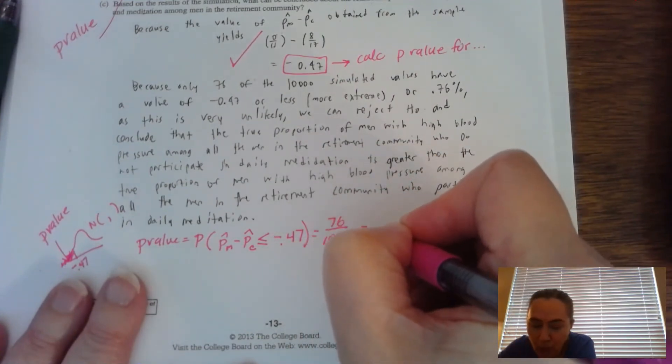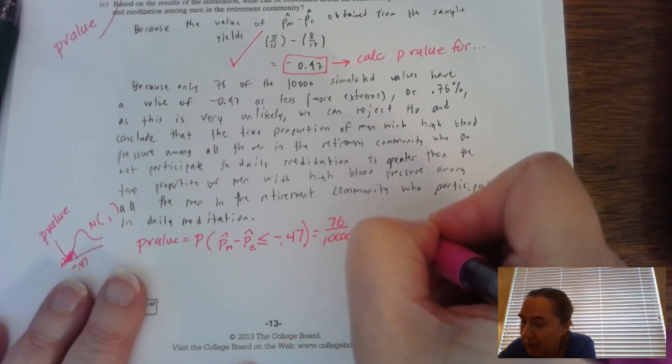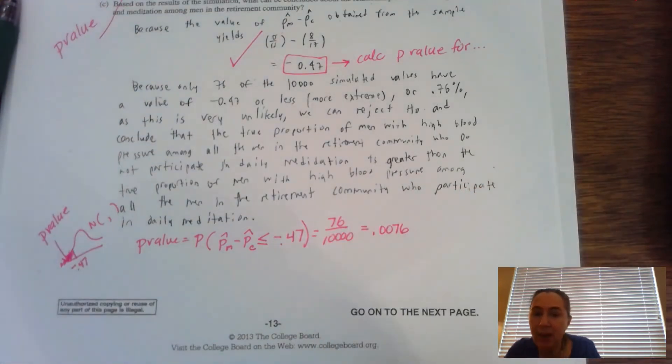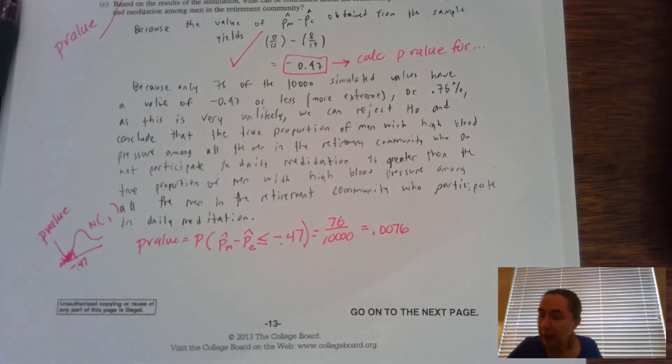So we end up getting 76 out of 10,000, which is equal to 0.0076. That is the P value. And we know if the P is low, we reject the hoe. So now in the conclusion, what we're going to be looking for.